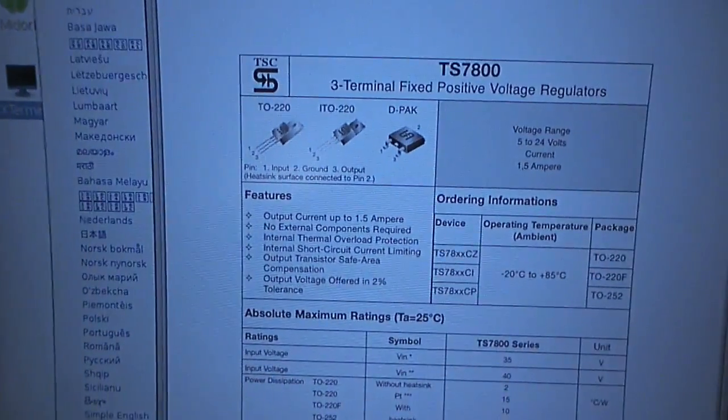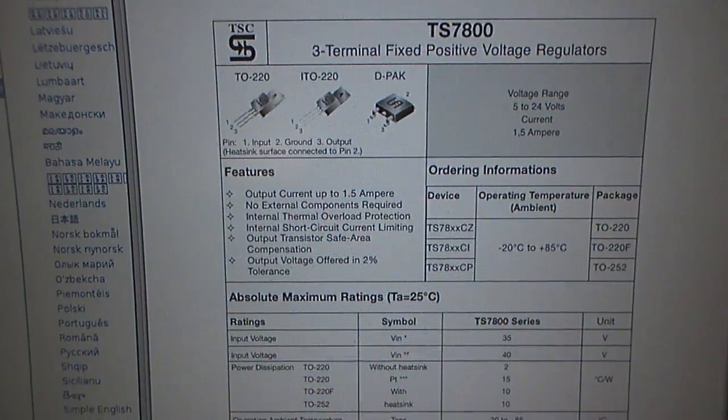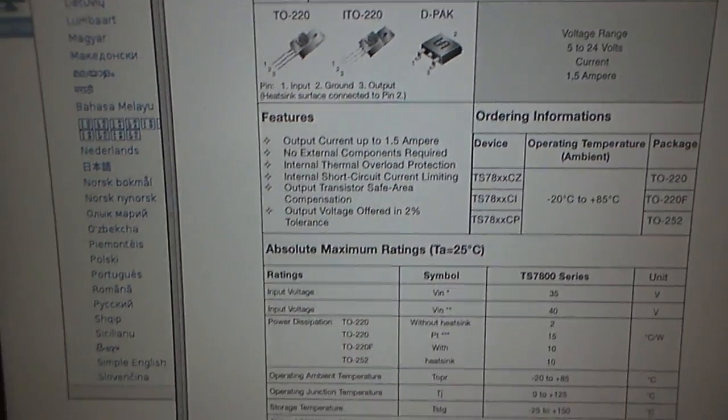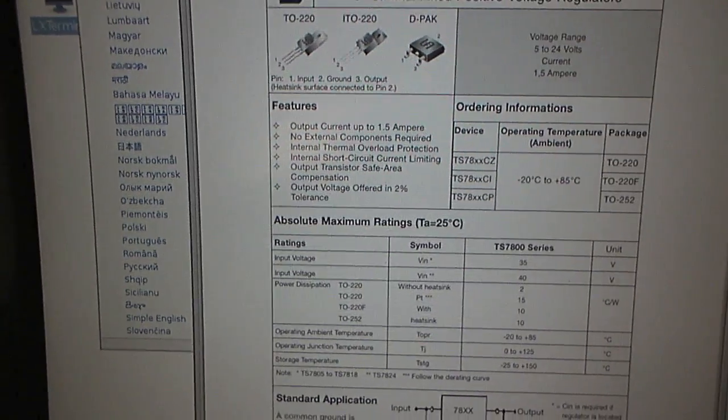So I'm just going to go over to the computer here where I've got a datasheet up about this 7805. You can see here a description of it. Pin 1 is the input, pin 2 is the ground, and pin 3 is the output.